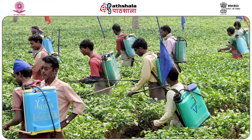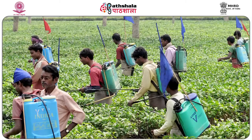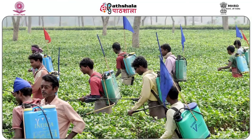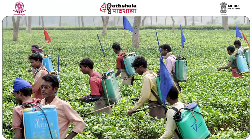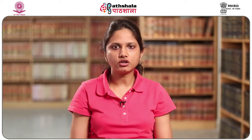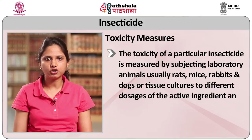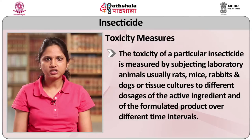Many insecticides can cause poisoning after being swallowed, inhaled or absorbed through the skin. Some insecticides are odorless, so the person is unaware of being exposed to them. Organophosphate and carbamate insecticides make certain nerve fibres fire erratically, causing many organs to become overactive and eventually to stop functioning. Pyrethroids can occasionally cause allergic reactions, but rarely cause other problems. The toxicity of a particular insecticide is measured by subjecting laboratory animals — usually rats, mice, rabbits and dogs — or tissue cultures to different doses of the active ingredients over different time intervals. These toxicity studies help estimate the risk that insecticides may cause harmful effects in humans.